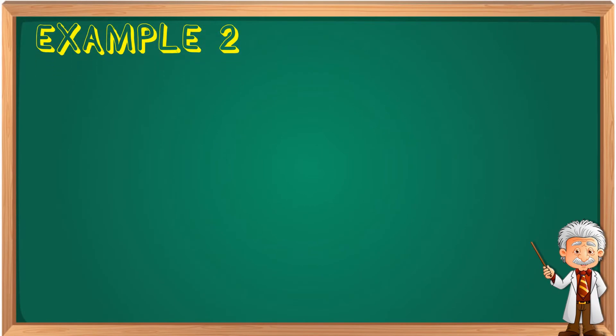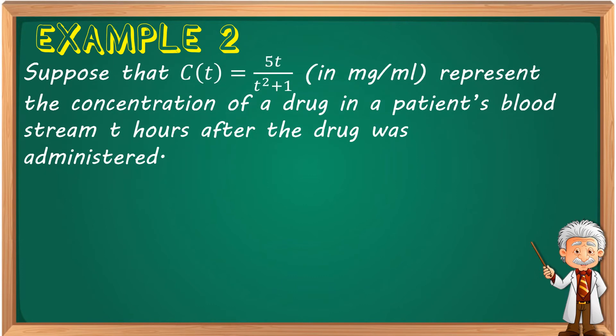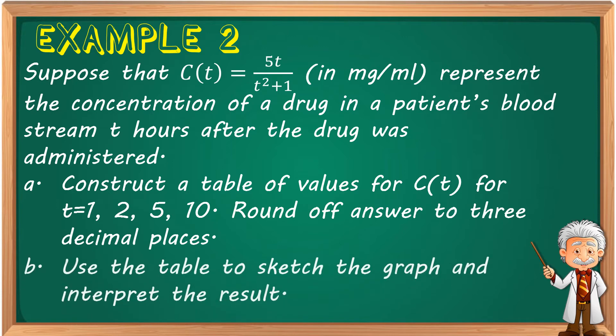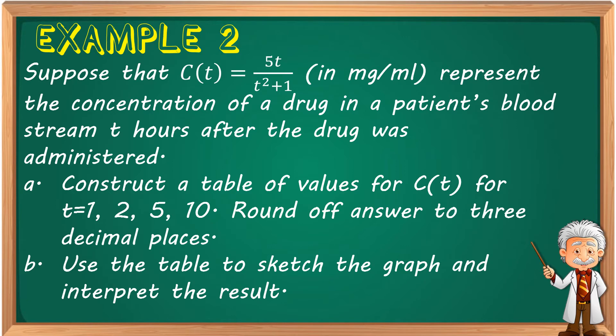Example 2. Suppose that c(t) = 5t/(t² + 1) in milligram or milliliter represents the concentration of a drug in a patient's bloodstream, t hours after the drug was administered. Construct a table of values for c(t) for t = 1, 2, 5, and 10. Round answer to 3 decimal places. Use the table of values to sketch the graph and interpret the results.